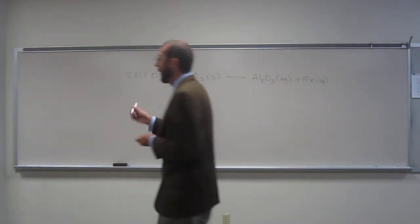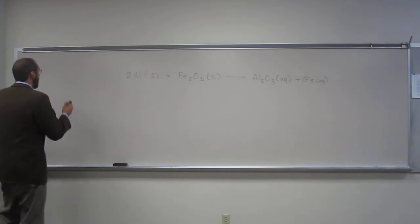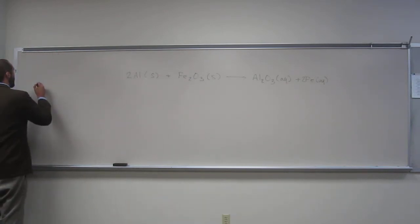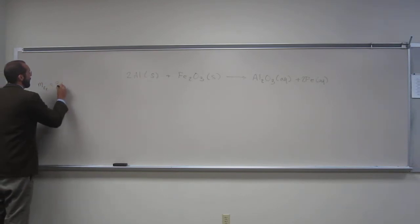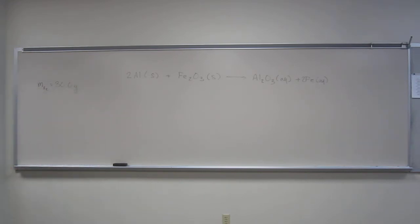Okay, is everybody okay with that? Let's try that problem. So what did it say? The theoretical yield of iron is 30 grams. So the mass of iron, 30 point, it actually says 30.0 grams.